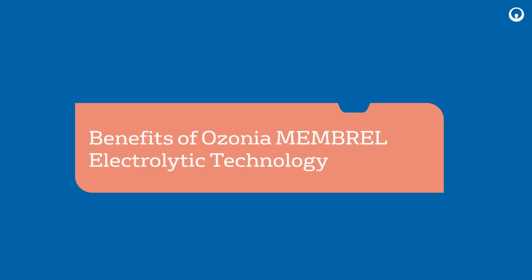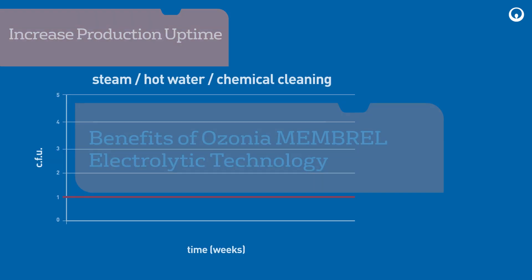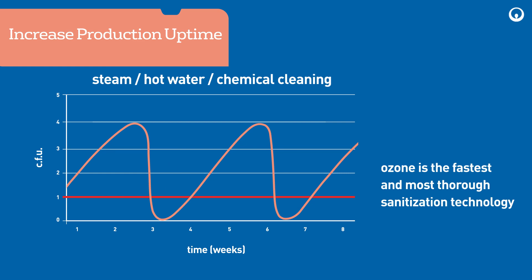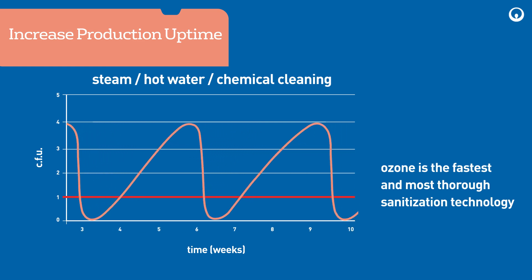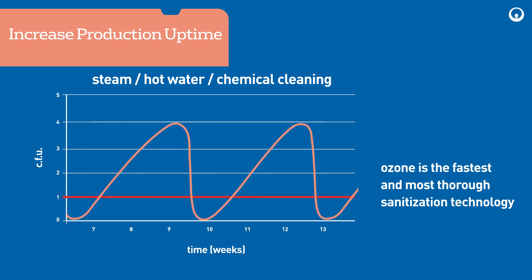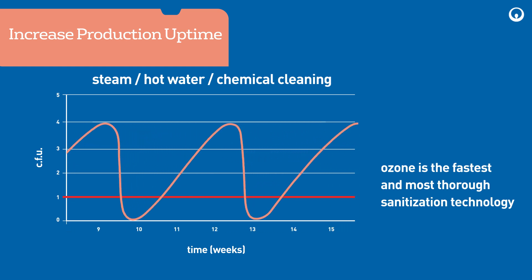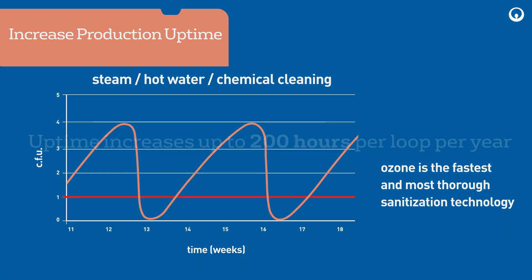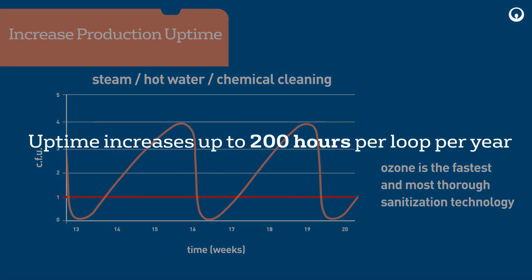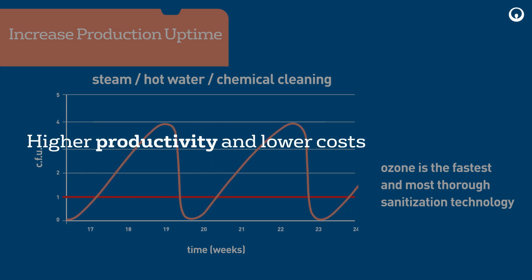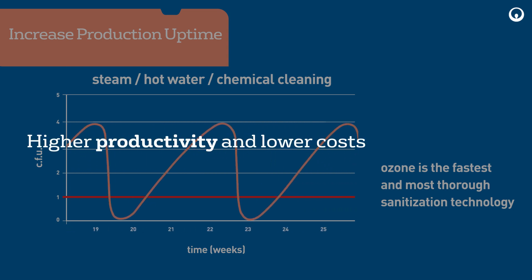Benefits of Ozonium membrane electrolytic technology include improved performance and uptime compared to other technologies. With continuous online ozone disinfection and sanitization, production does not need to be frequently halted to sanitize the system, and production uptime increases up to 200 hours per loop per year, translating into higher productivity and lower costs.